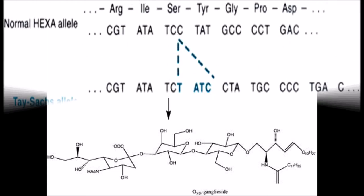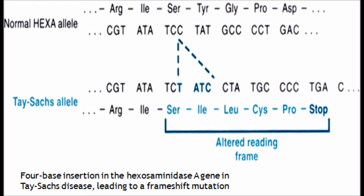Tay-Sachs disease is a rare and usually fatal genetic disorder that causes progressive damage to the nervous system. Symptoms usually begin before a baby is six months old. The most noticeable early symptoms include a baby being excessively startled by sudden noises and red dots appearing in the middle of their eyes. It eventually slows development and movements altogether. Most children with the condition die before they are four years old. Less common forms of Tay-Sachs disease can begin in later childhood or even early adulthood. These usually progress less rapidly, although are usually still fatal.